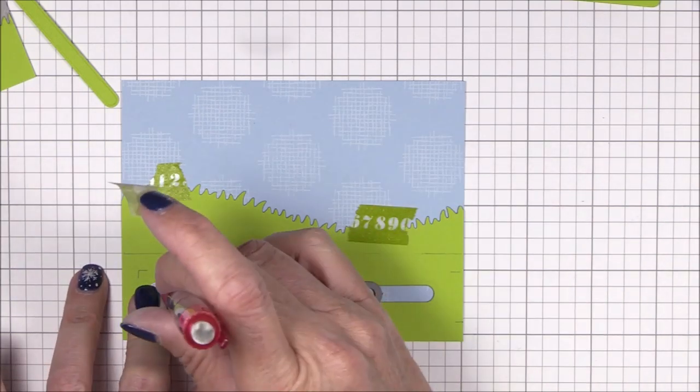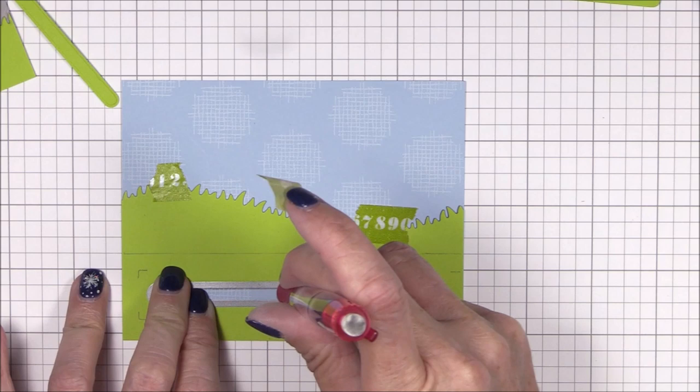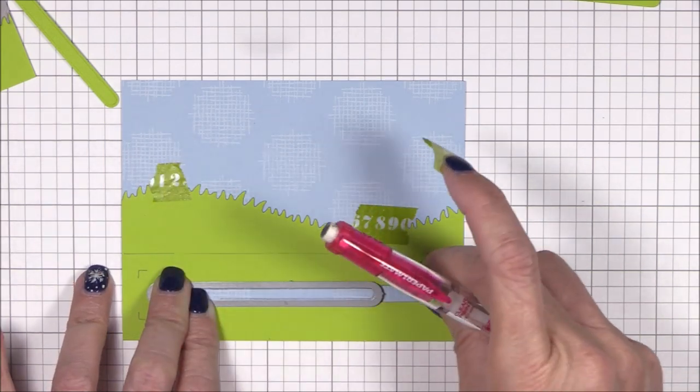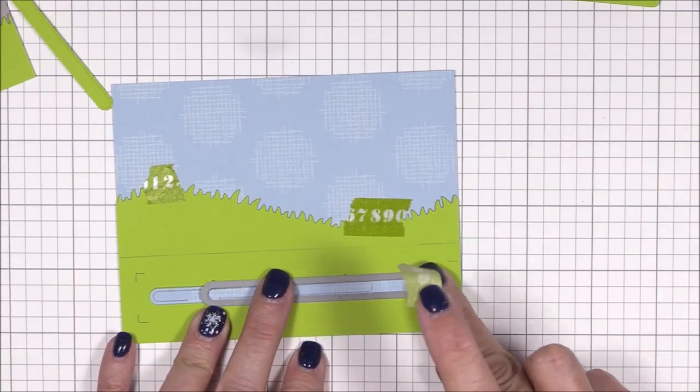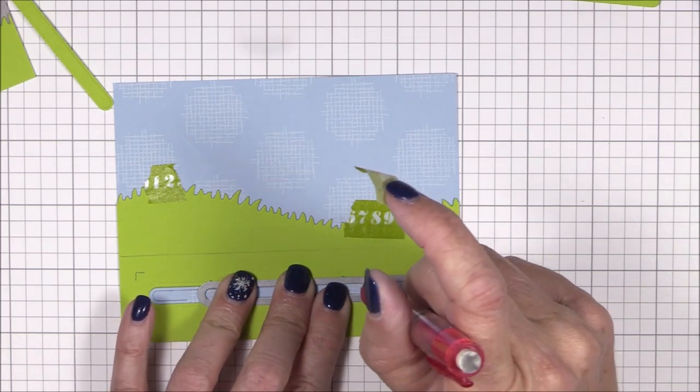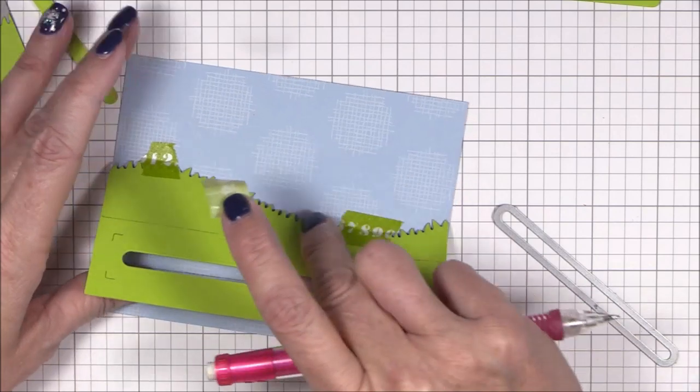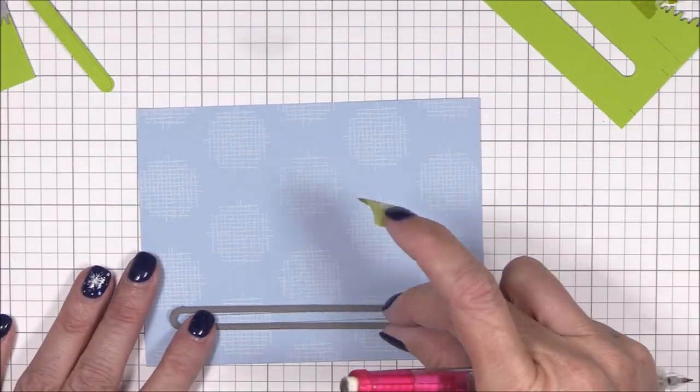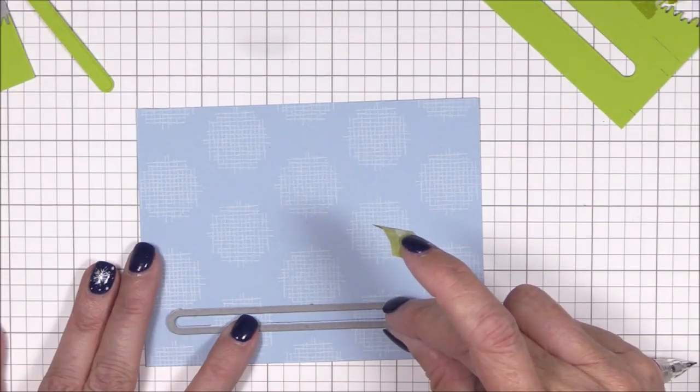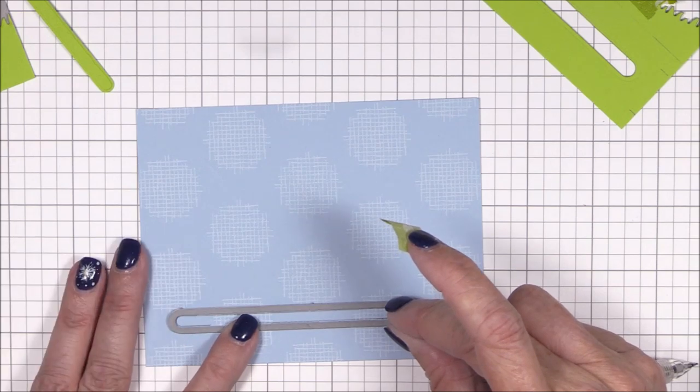You'll notice that I secured the grass and the image panel together with some washi tape so that the pieces don't slide around while I'm making my pencil marks. Once I've marked the inside of that channel die, I'll position the die onto the image panel and I'll die cut it once and then again to complete the elongated channel, just as we did with the grass channel.